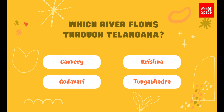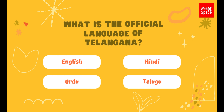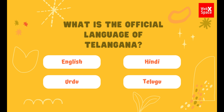Which river flows through Telangana? Kaveri, Krishna, Godavari, Tungabhadra. The correct answer is Godavari.